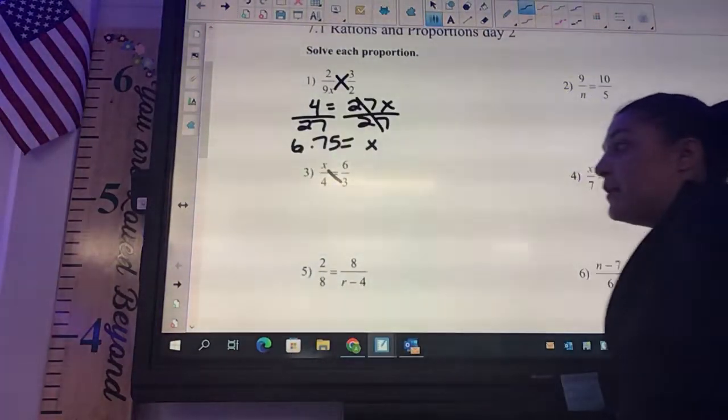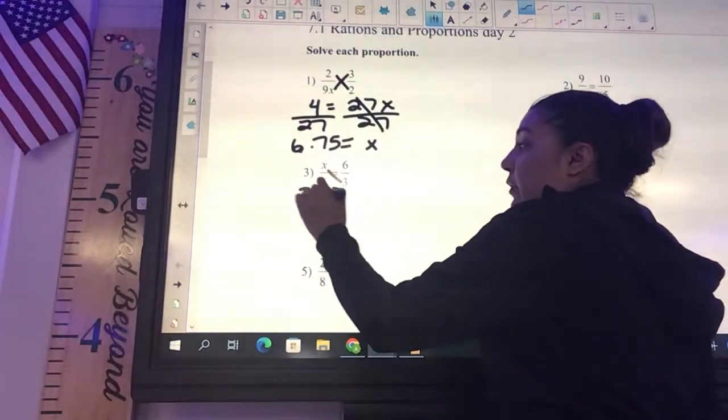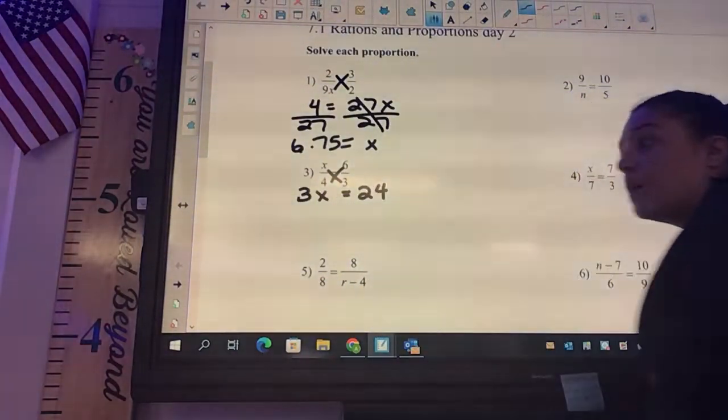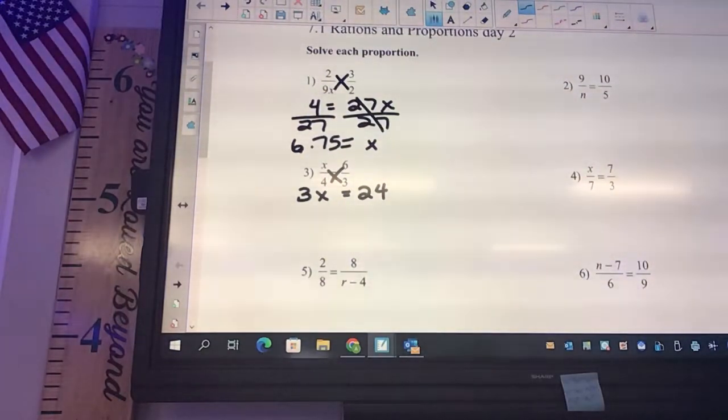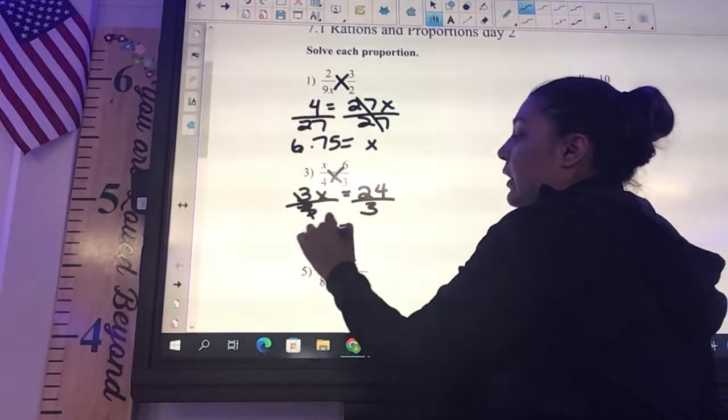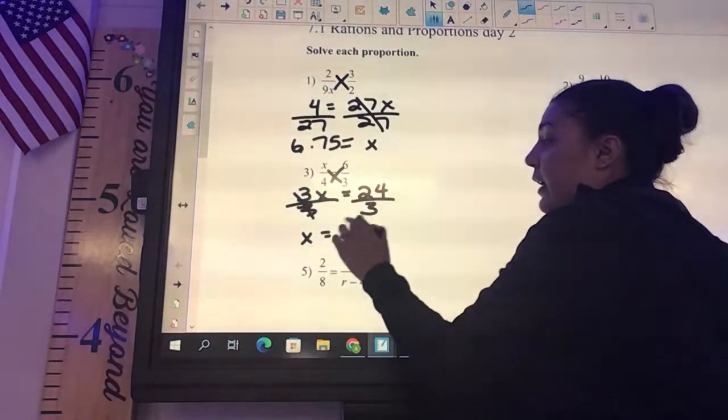So on this one, we got 3 times x, it's going to be 3x. 6 times 4 is going to be 24. And then we're going to divide by 3. What are you going to get for your x? 8. 8.